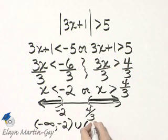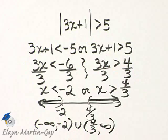and then the shading starts again at 4 thirds, and it goes all the way to infinity. So negative infinity to negative 2, union 4 thirds to infinity. There's my solution set in interval notation.